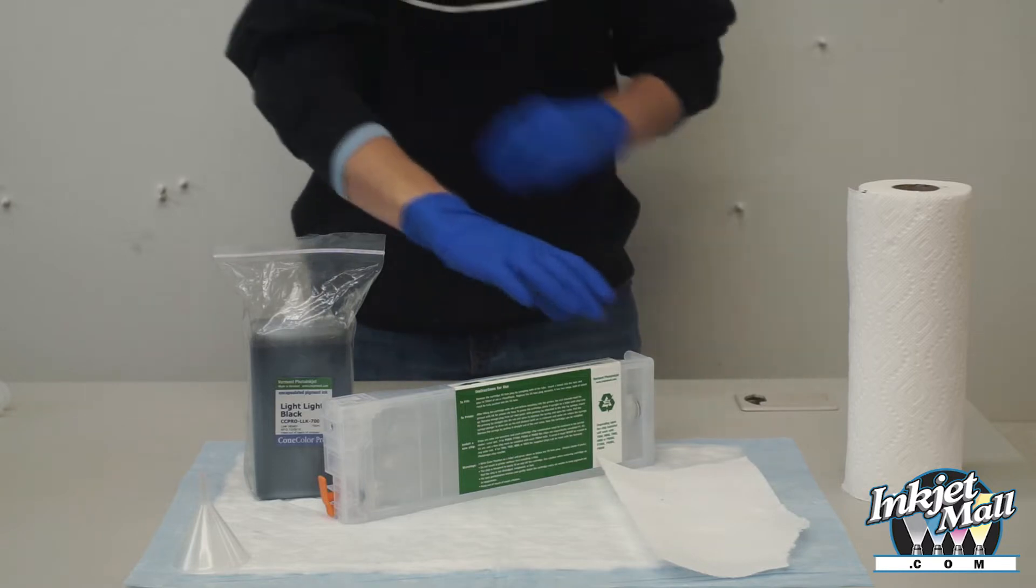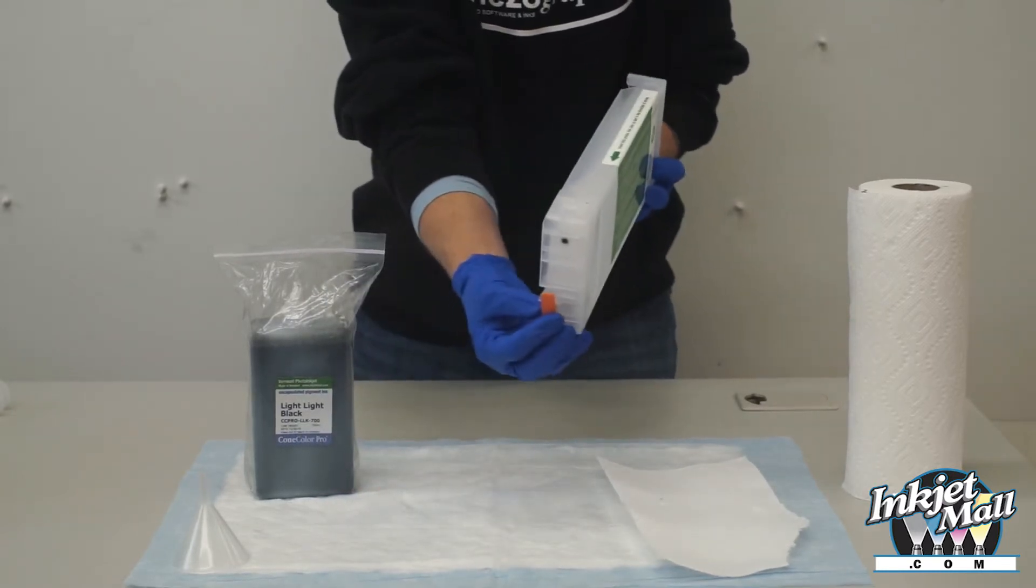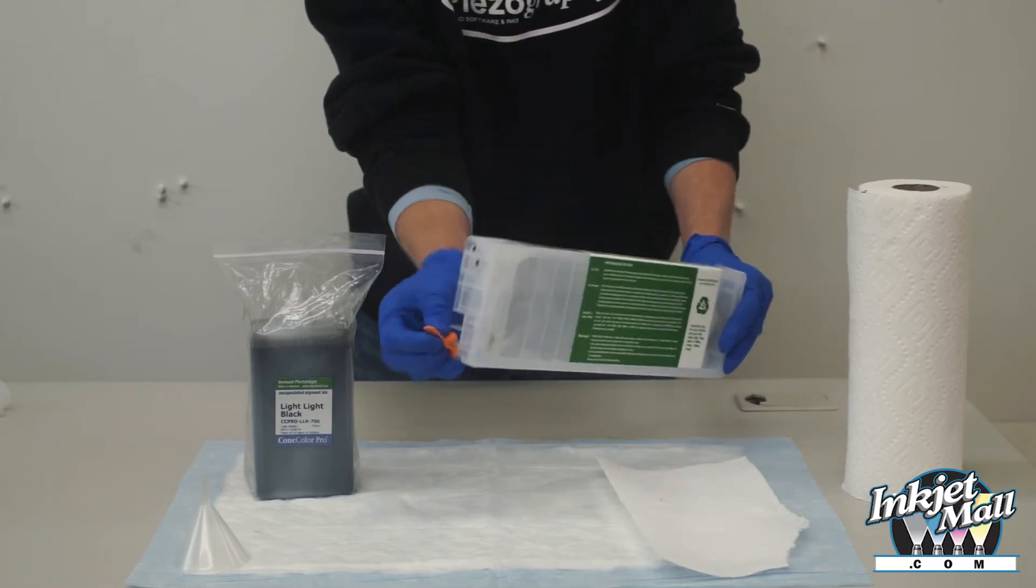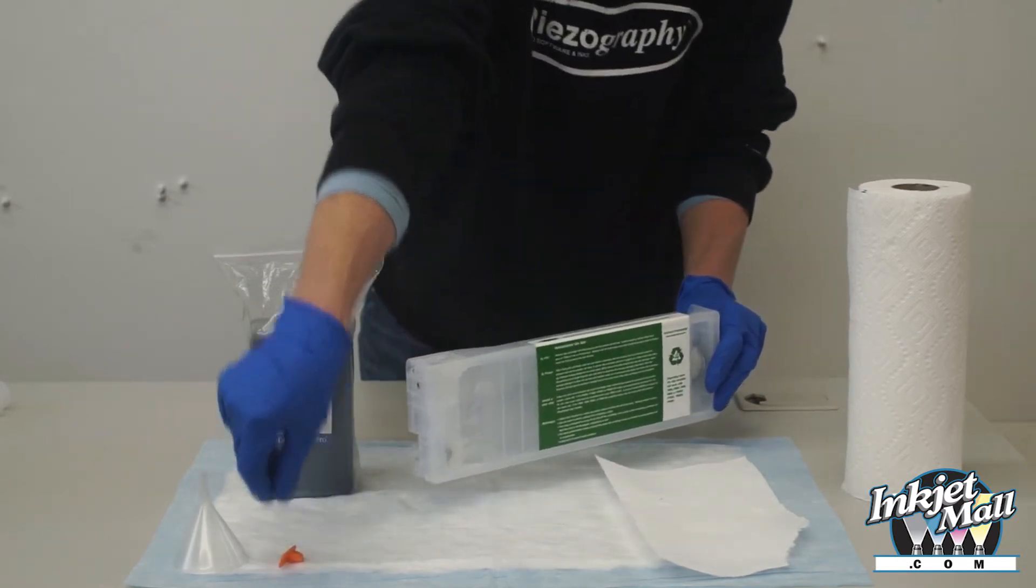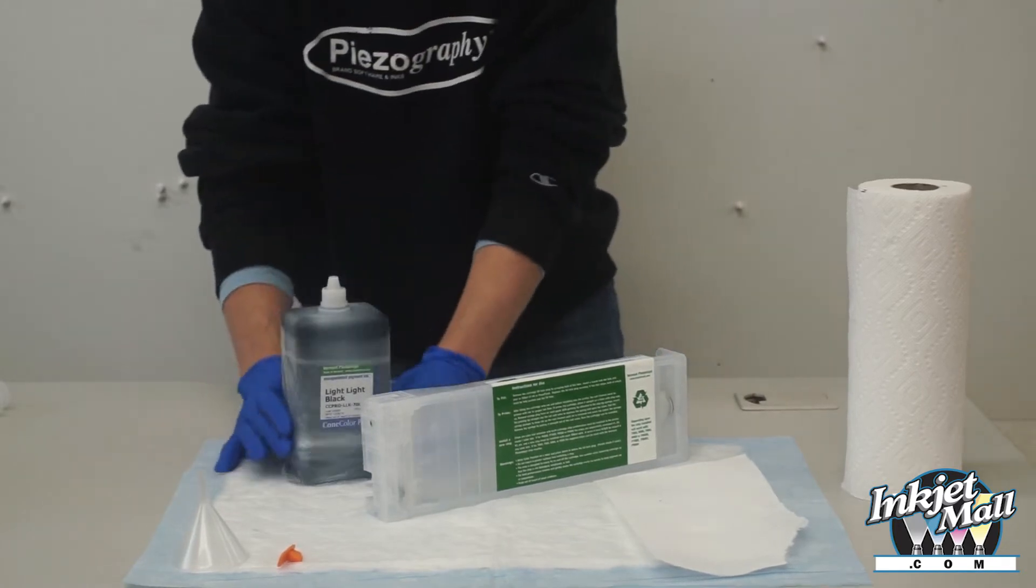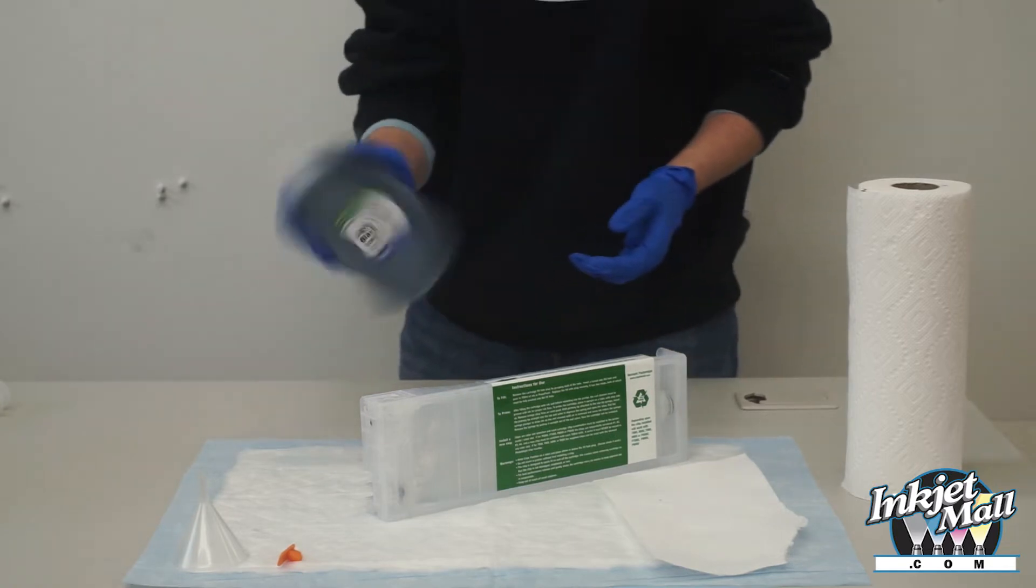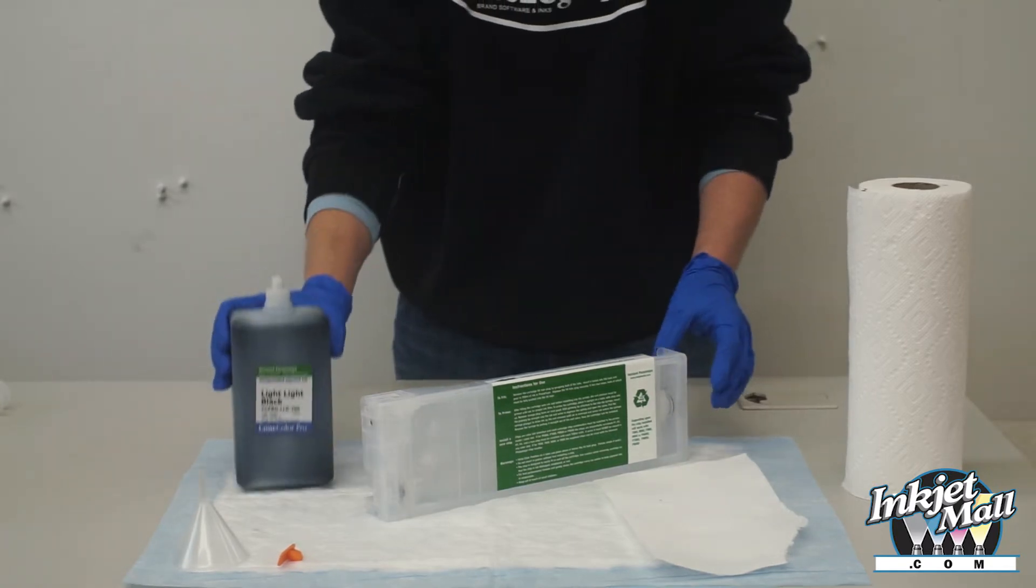Put on your gloves. Remove the orange plug from the air inlet port of the cartridge. Select the correct bottle of ink and shake it gently. Unscrew the top and open the bottle by removing the silicone plug.